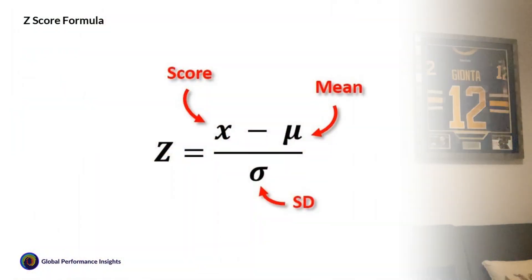A really quick recap on the Z score: we take today's score, or the score that we're interested in comparing, and we subtract the group average — whether that's for an individual over time or them compared to their peers — the reference group average. We then divide that by the reference group standard deviation. That gives us the number of standard deviations that score is away from the mean in reference to this comparison data set.